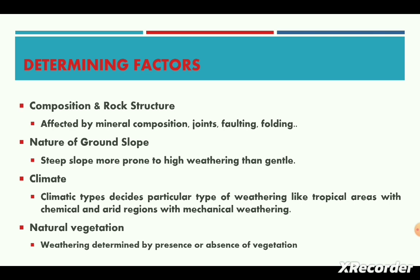The first controlling factor is the composition and structure of rocks. Weathering involves disintegration and decomposition of rocks, hence the composition of minerals, joint patterns, faulting, and folding largely determine the nature and intensity of weathering. A carbonate rock has more soluble minerals and is easily affected by chemical weathering. Rocks with vertical strata are easily loosened due to temperature change or frost action, while rocks with horizontal beds are more compact and less affected by weathering.